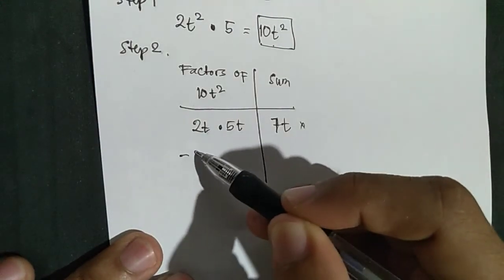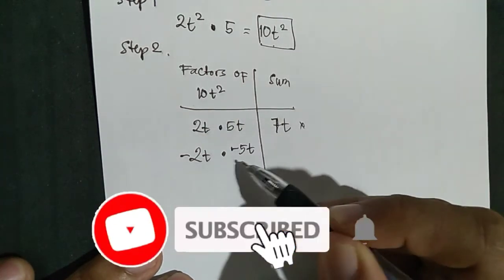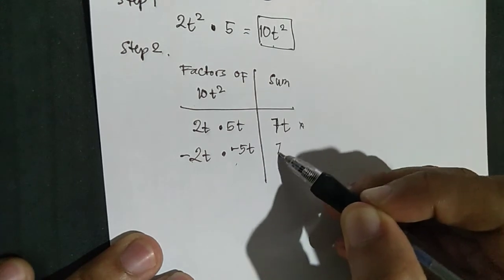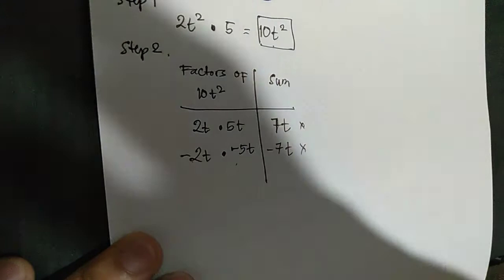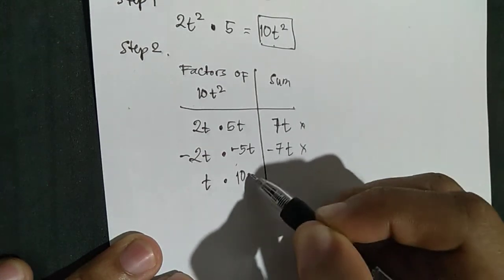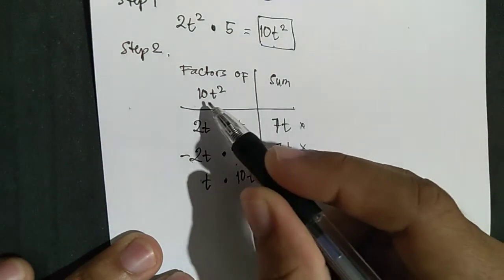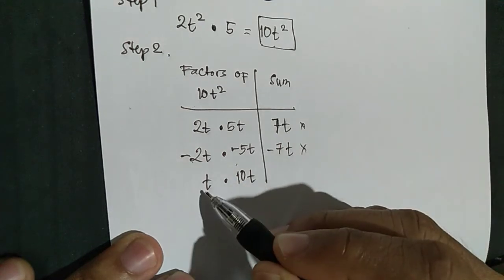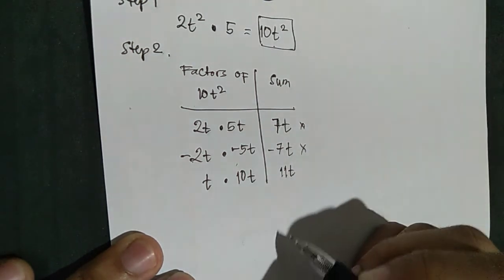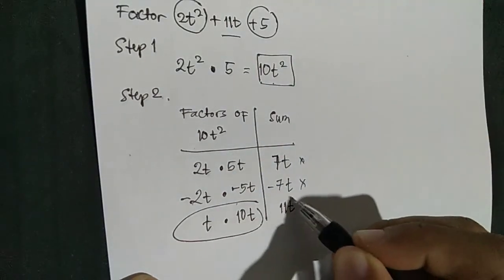Next, try T times 10T. T times 10T gives 10T squared. Adding 1 plus 10 gives 11, so the sum is plus 11T. We got 11T, which equals the middle term. Therefore, T and 10T are the factors of 10T squared whose sum equals the middle term 11T.